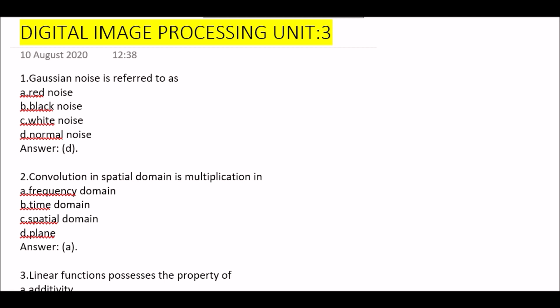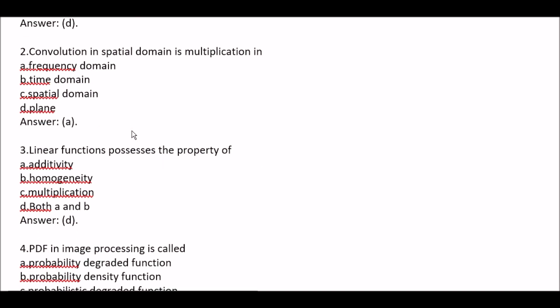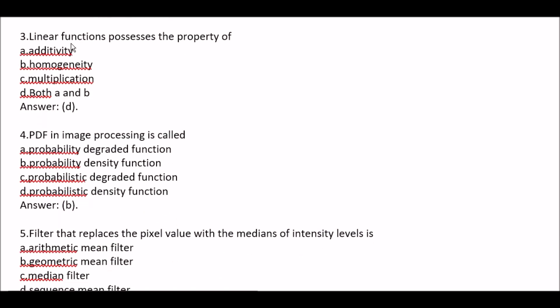Question 1: Gaussian noise is referred to as — Option A Red Noise, Option B Black Noise, Option C White Noise, Option D Normal Noise. Right option is Option D, that is Normal Noise. Question 2: Convolution in Spatial Domain is Multiplication in — Option A Frequency Domain, Option B Time Domain, Option C Spatial Domain, Option D Plane. Right option is Option A, that is Frequency Domain.